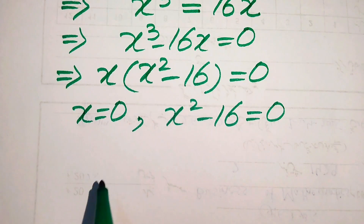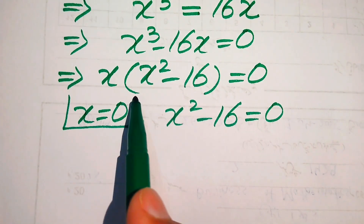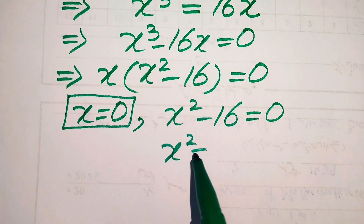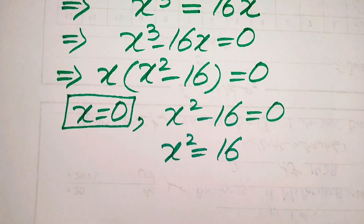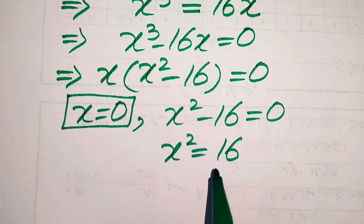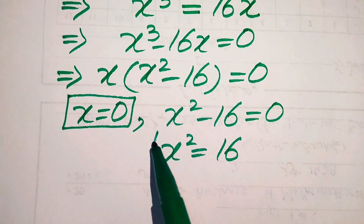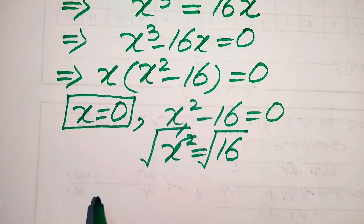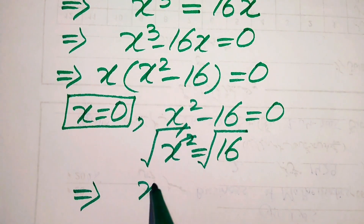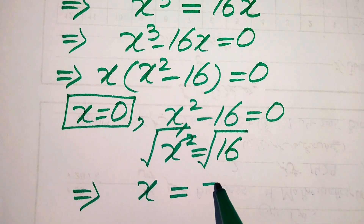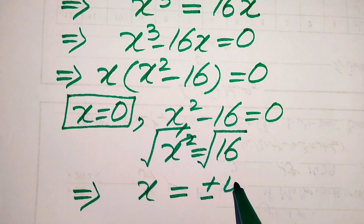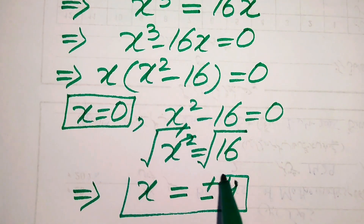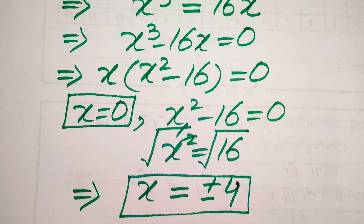From the first case, x equals 0 is our first root of the given equation. For the second case, we move 16 to the right hand side and it becomes x squared equals 16. To find the other roots we take the square root on both sides, giving us x equals plus or minus 4. So these are the other two roots of the given equation.